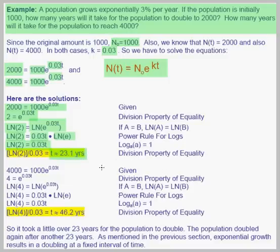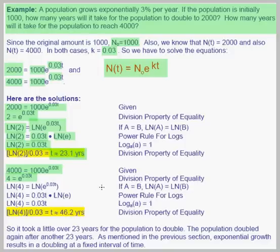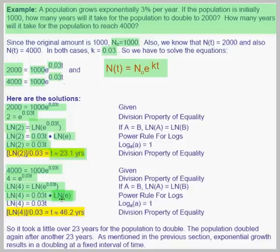The second question is solved the same way except we use 4,000 instead of 2,000. We have 4,000 equals 1,000 times e to the .03t power. Dividing both sides by 1,000 gives 4 equals e to the .03t power. We take natural logs of both sides, move the exponent out front to get ln of 4 equals .03t times natural log of e. Since natural log of e equals 1, we get ln of 4 equals .03t, and dividing by .03 gives t equals 46.2 years.